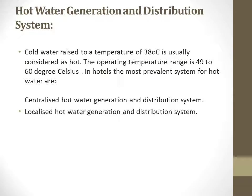We will now be learning about hot water generation and distribution systems. We need to understand how to warm water and distribute it. Cold water is usually warmed to around 38 degrees Celsius, and the operating temperature is 49 to 60 degrees Celsius. We divide the system into two major categories: centralized hot water generation and distribution system, and localized hot water generation and distribution system. We will learn about them through various diagrams.